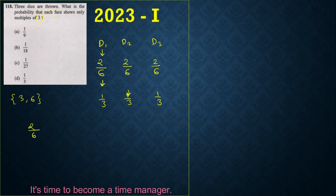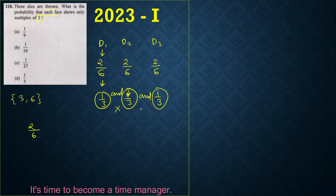The question asks for all of them — meaning D1 AND D2 AND D3 — and 'and' means multiplication. So we multiply: 1/3 × 1/3 × 1/3, which gives 1/27. So the answer is C.